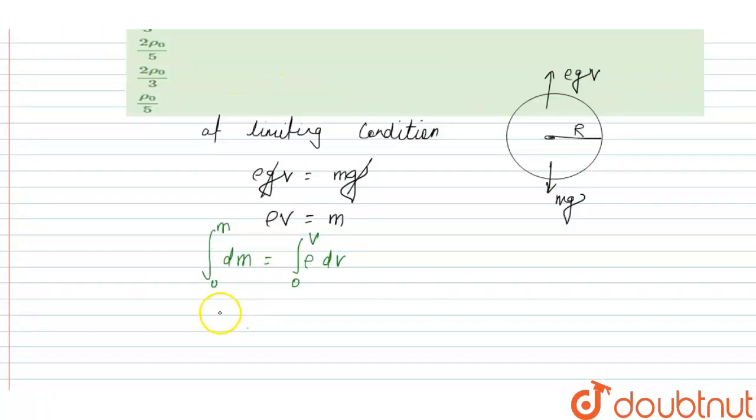Mass of the sphere can be written as: mass equals the integral of ρ dV, which equals the integral from 0 to R of ρ times 4πr² dr.